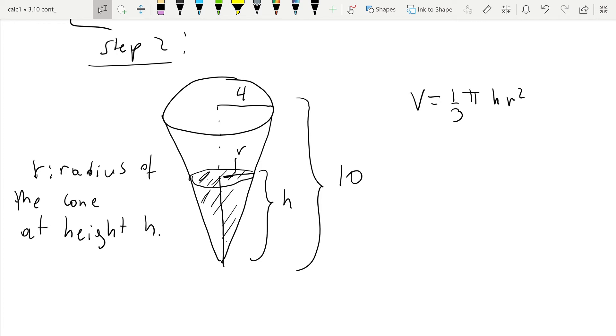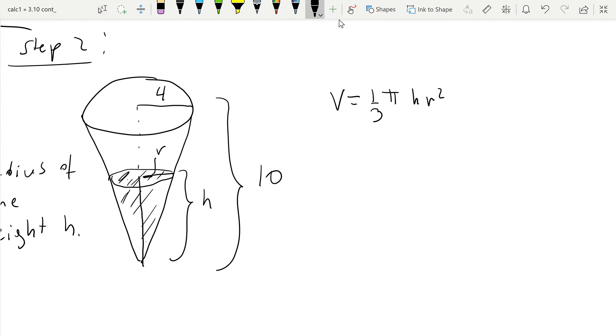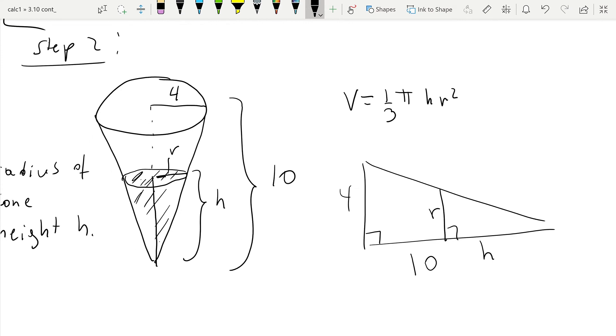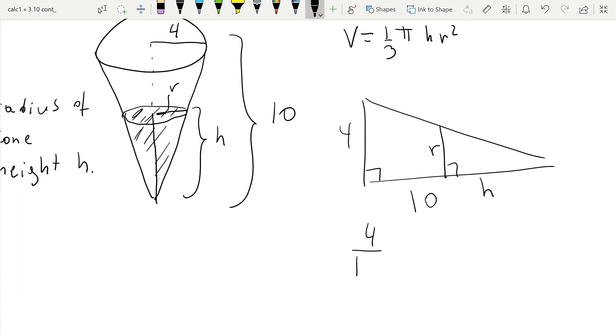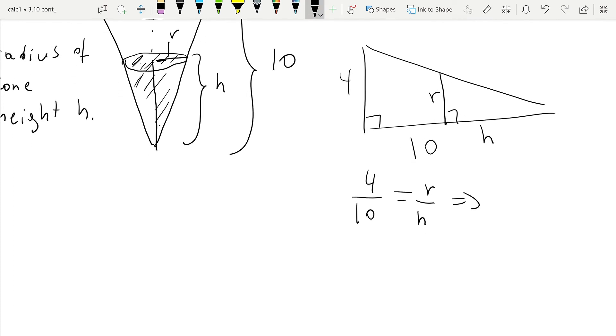If we look at the cross section in the Y-X plane of the cone, we see that there are two triangles that are similar. We put the cone looking from the side. We have the radius 4 and the total height which is 10, and we have a smaller triangle here whose radius is R and whose height is H. These two triangles are similar, meaning that 4 divided by 10 is equal to R divided by H, which equals 0.4. This implies that R is 0.4H.